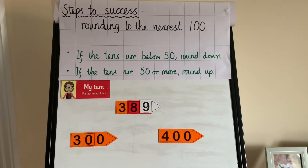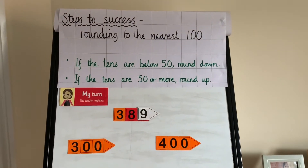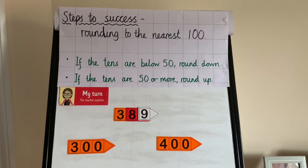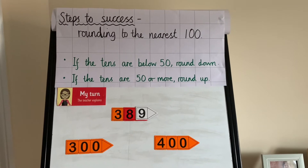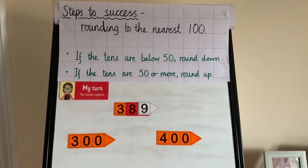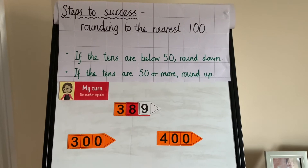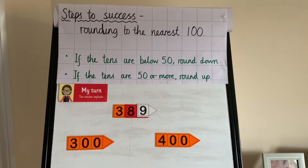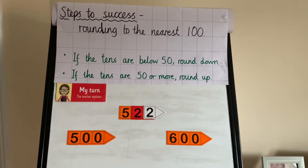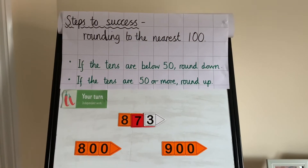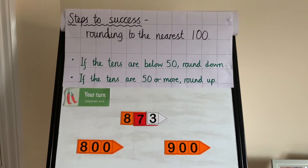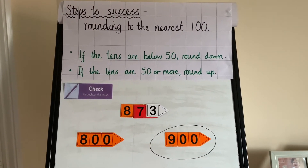Now we're going to look at rounding to the nearest hundred. Here are the steps to success: if the tens are below 50 you round down; if the tens are 50 or more you round up. You can also use the rhyme — one to four, touch the floor; five to nine, climb the vine. Let's look at 389: it lies between 300 and 400. The tens and ones together are 89, which is more than 50, so it rounds up to 400. 522 — the tens and ones are 22, which is less than 50, so it rounds down to 500. Now it's your turn: 873 lies between 800 and 900. It rounds to 900 because 73 is greater than 50.